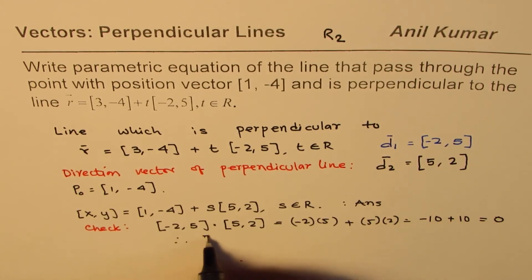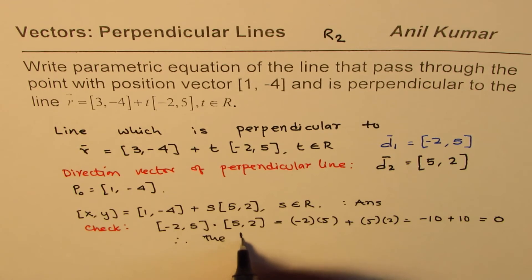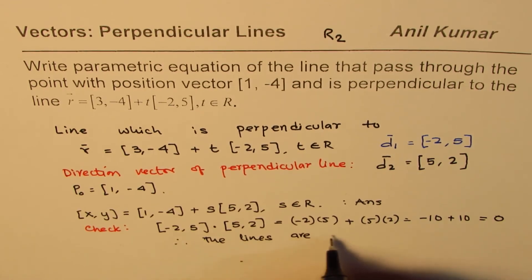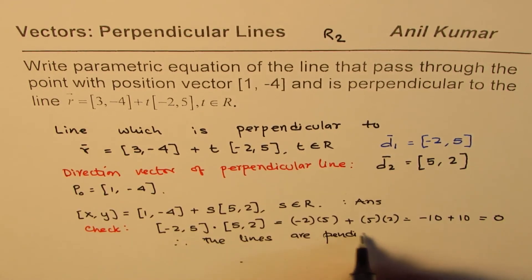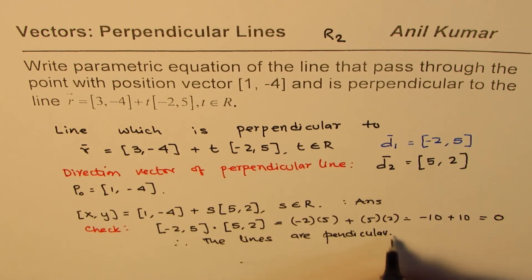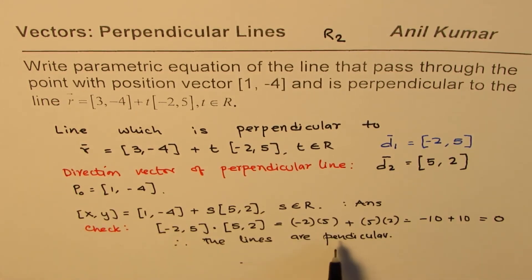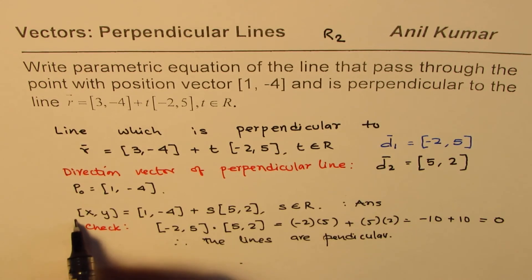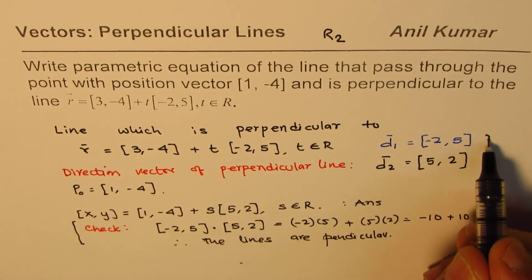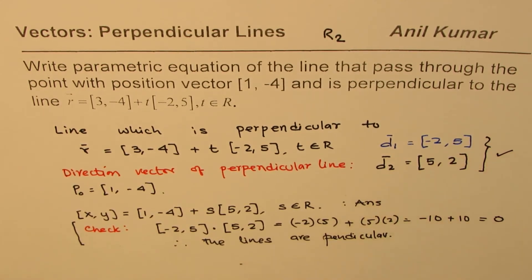Therefore, we say the lines are perpendicular. So that is a check. Now, you are not really required to make a check, but this is just to show you that what we did here was correct.